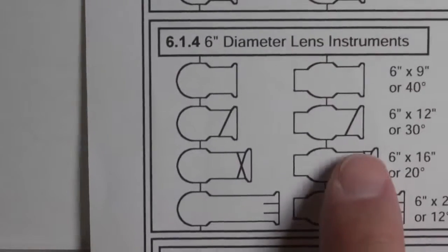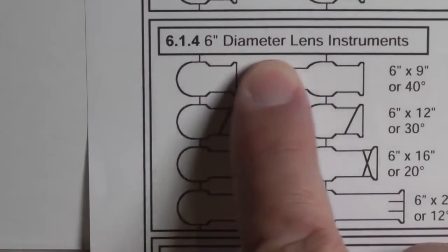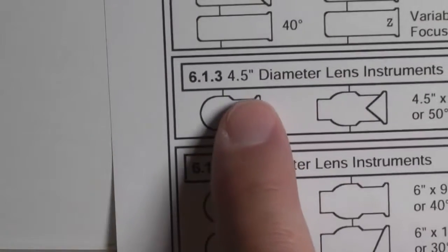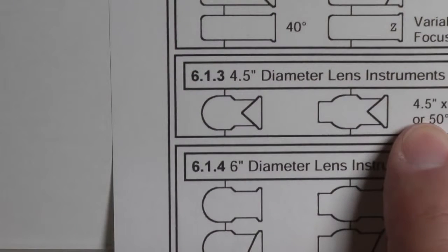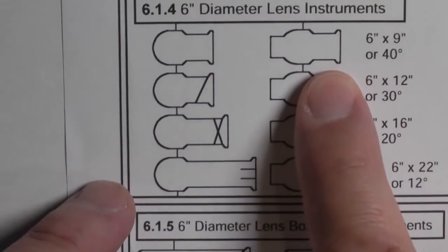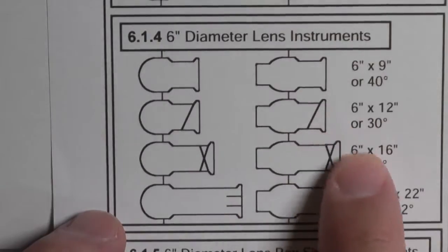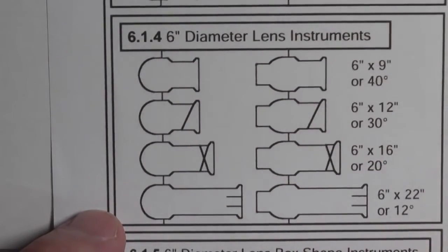Much more prevalent are the six inch diameter lenses and a four and a half inch diameter lens, which is also a four and a half by six and a half, or simply known as a four and a half. We also know these as six by nines, six by twelve, six by sixteens, and six by twenty-twos.